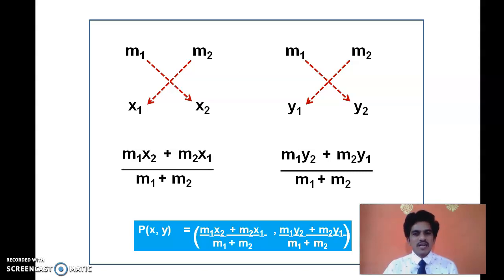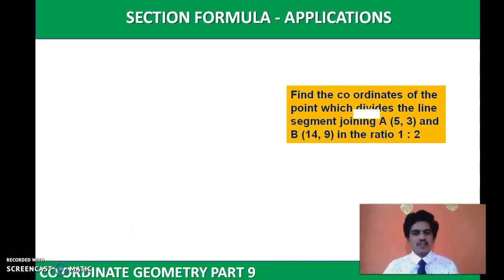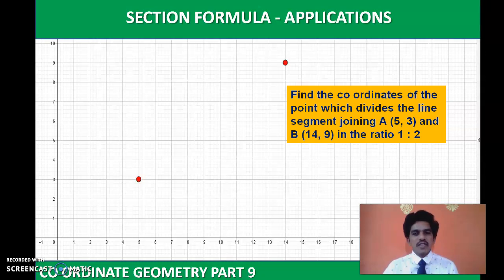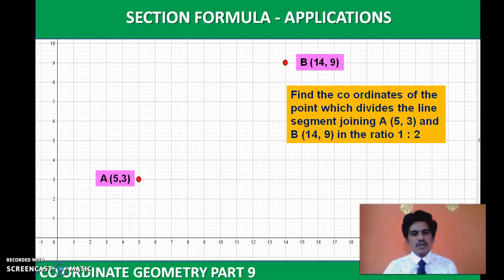Now let us take an example. Find the coordinates of the point which divides the line segment joining A(5, 3) and B(14, 9) in the ratio 1:2. Both points lie in the first quadrant. For your understanding, I will draw a graph — though you need not draw the coordinate plane when solving these problems.